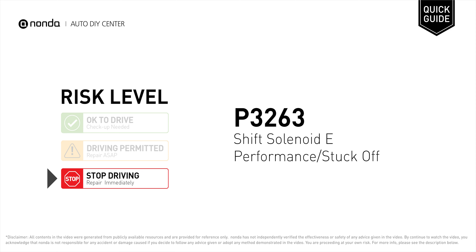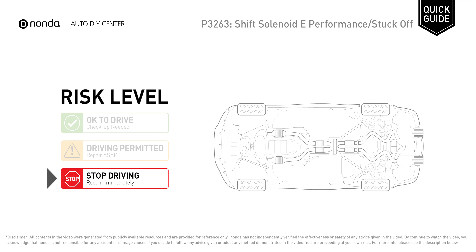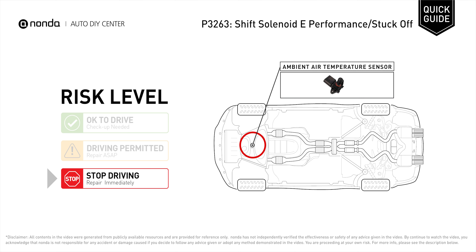P3263 is a diagnostic trouble code for shift solenoid E performance or stuck off. Under this circumstance, stop driving and repair your vehicle immediately. It indicates that there is a fault within the ambient air temperature sensor circuit.